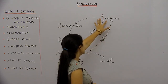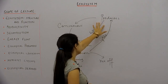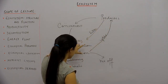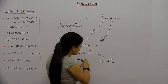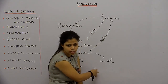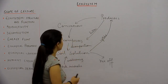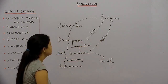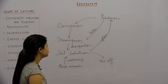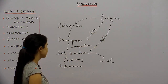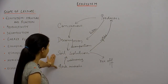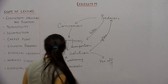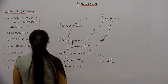The producers also give out litter which is used by the decomposers, and some of the soil solution runs off. This is a very basic and simple model of phosphorus cycling in the terrestrial ecosystem, and that covers nutrient cycling.